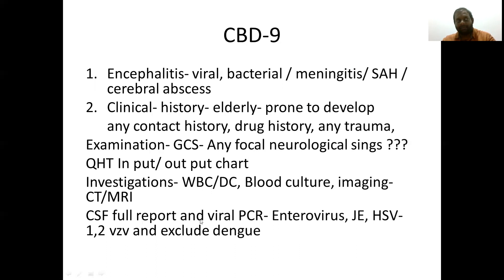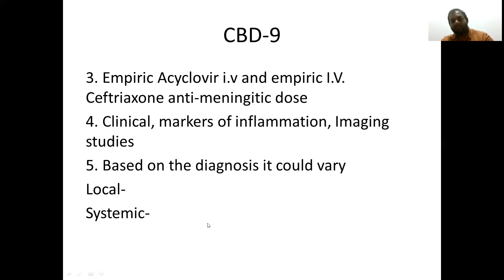In encephalitis, CSF cell count may be elevated but it is not diagnostic like meningitis. Viral PCR based on CSF is useful — we can run a virus panel. Japanese encephalitis, HSV-1/2, varicella, and varicella-zoster antibodies should be checked. Empiric acyclovir is appropriate in patients presenting with acute history, as the most common etiology in viral encephalitis is HSV.